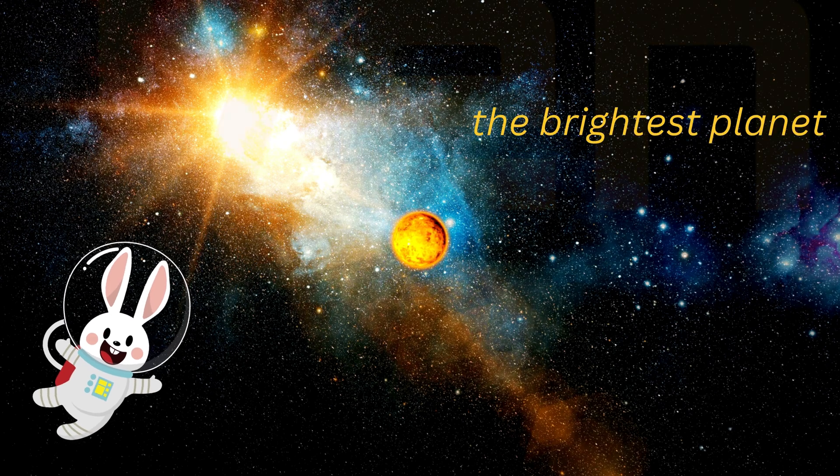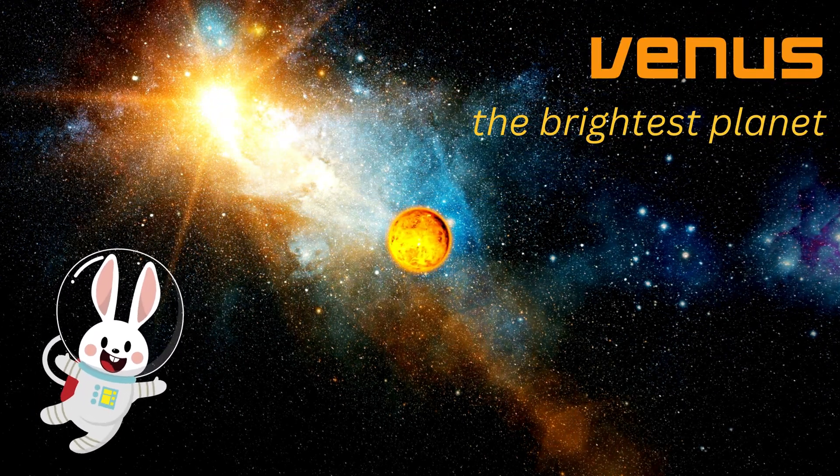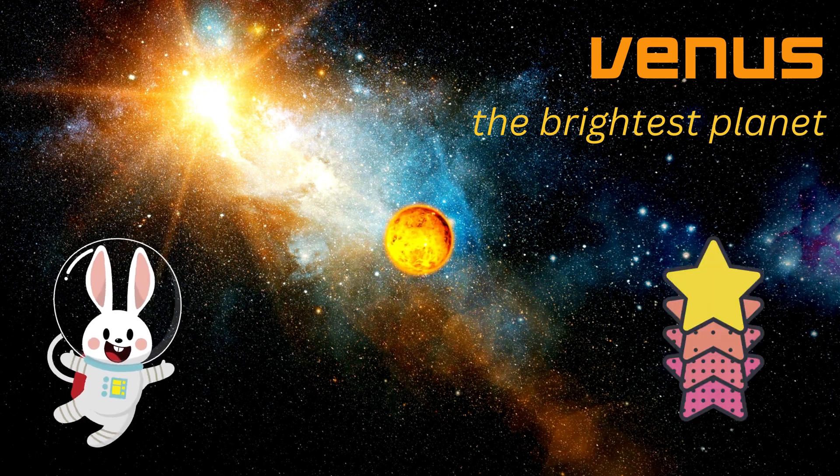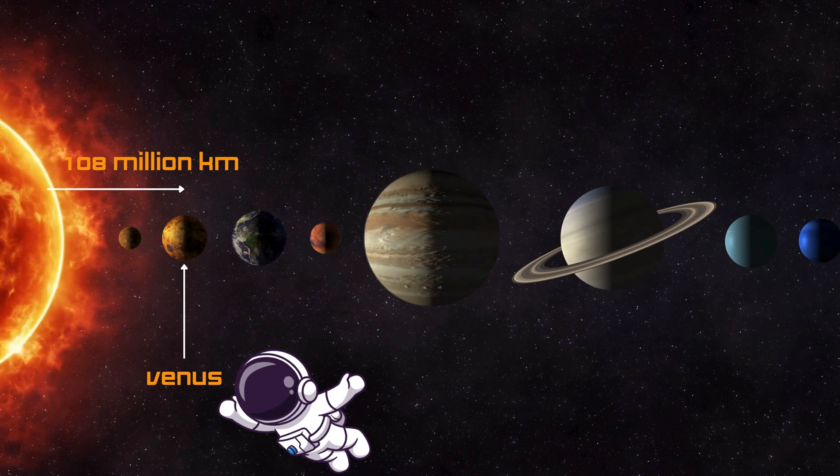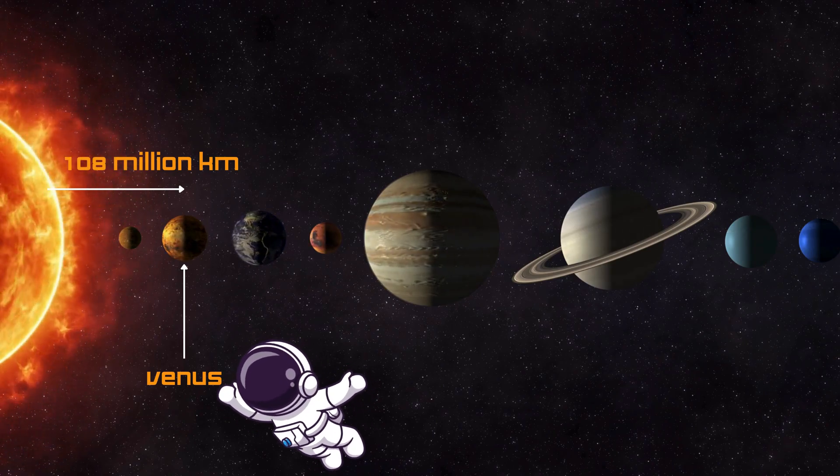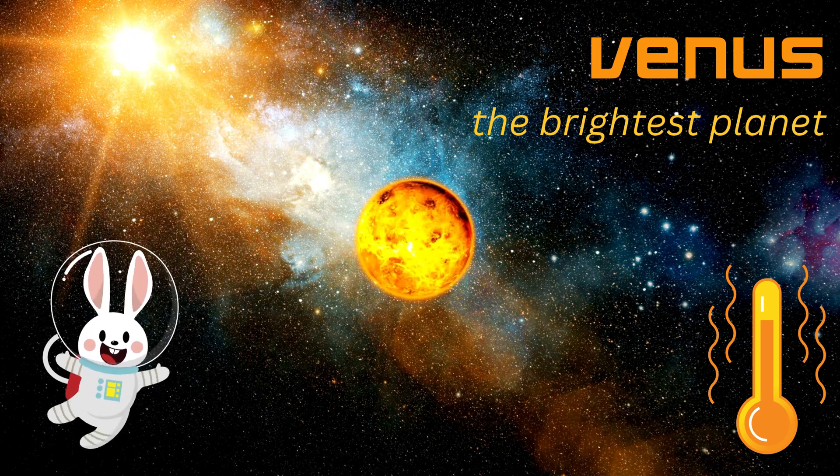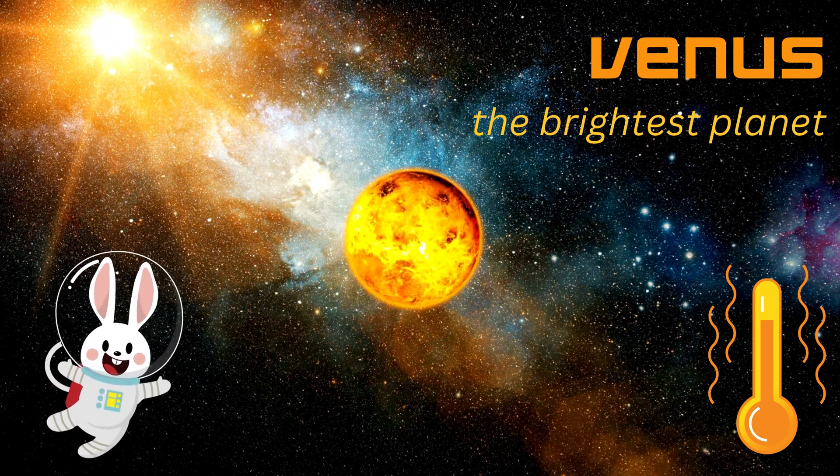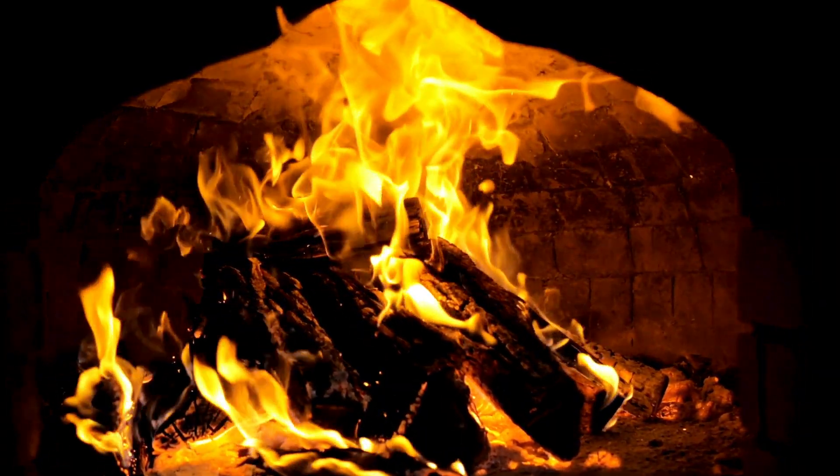Next up, say hello to Venus. This planet is so bright, you can even see it in the sky sometimes, shining like a star. Venus is about 67 million miles, 108 million kilometers from the sun, and it's known for being the hottest planet in the solar system, with temperatures reaching 900 degrees Fahrenheit, 475 degrees Celsius. That's hotter than your oven!